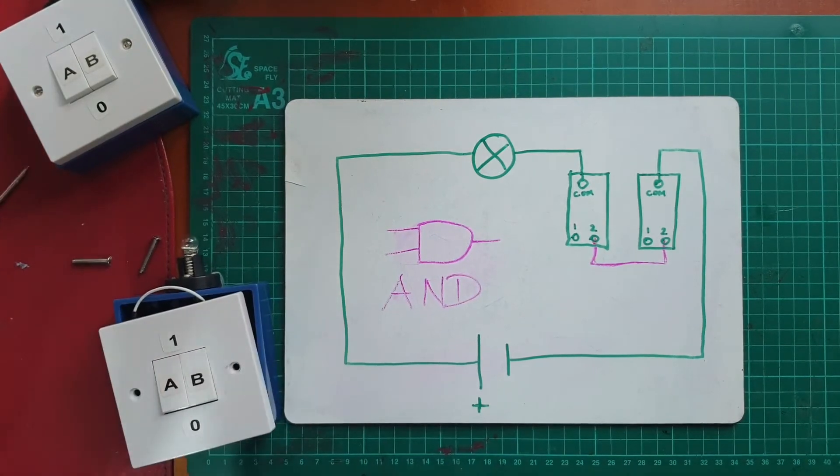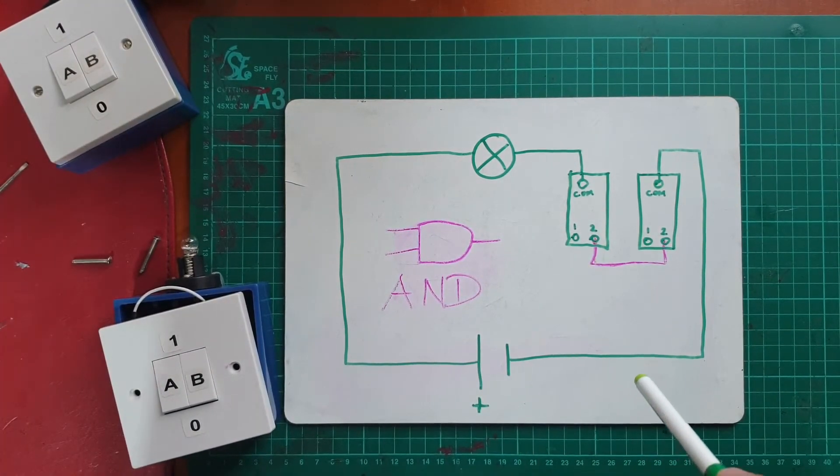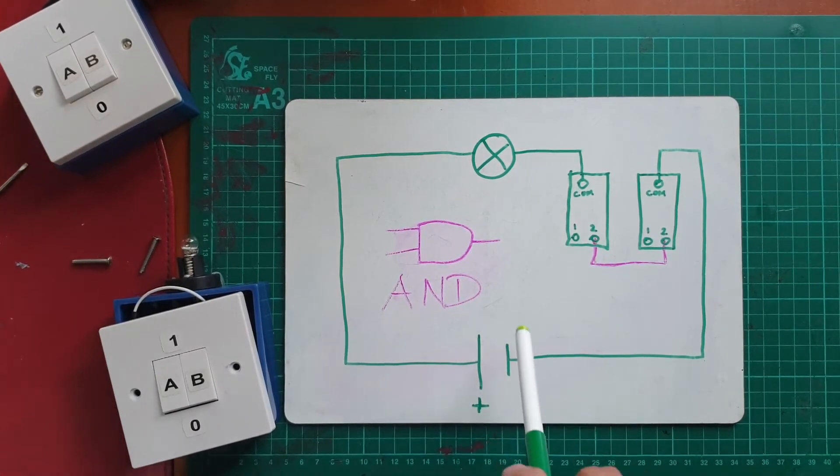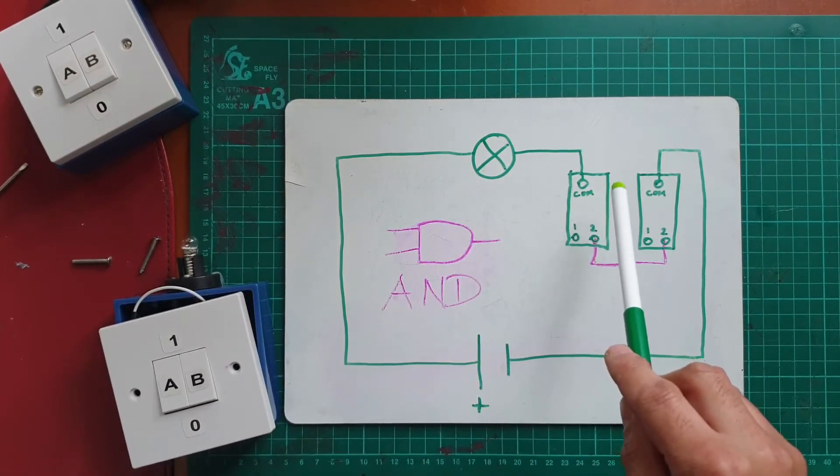So here's the wiring diagram. Feel free to hit the pause if you want to draw your own diagram. So this is for the AND switch, and you can see we've got the battery, bulb, and the two switches.